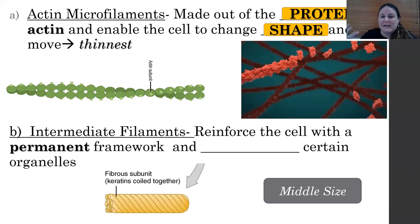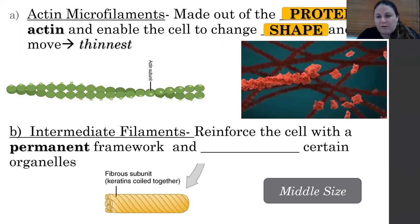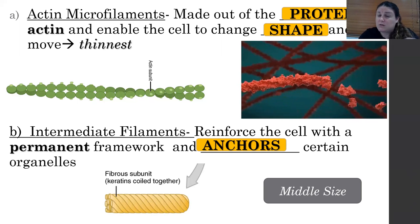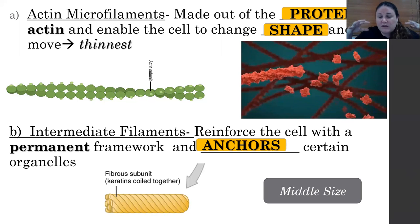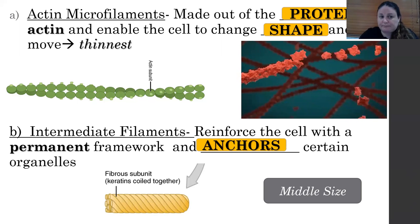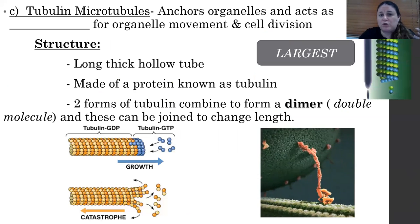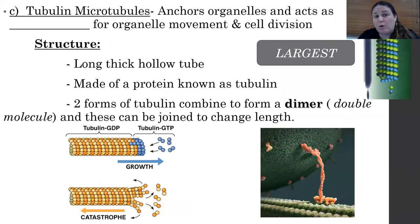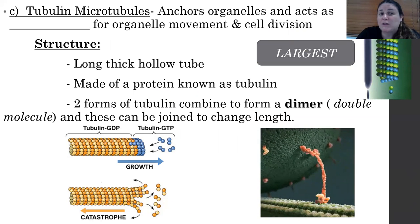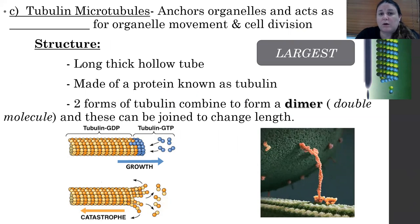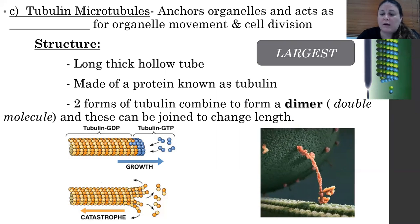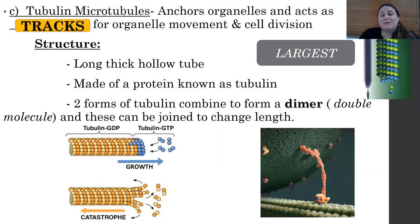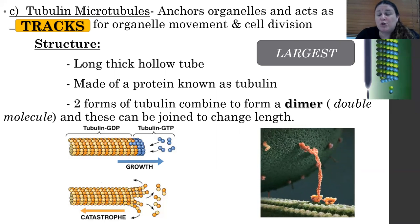The intermediate filaments are the middle size — easy to remember because intermediate is in the middle. They help reinforce the cell with a permanent framework and can anchor organelles. The largest type is the tubulin microtubules — probably the most referenced throughout the course. These anchor organelles, act as tracks for motor proteins and organelles to move on, and are heavily used in cell division.